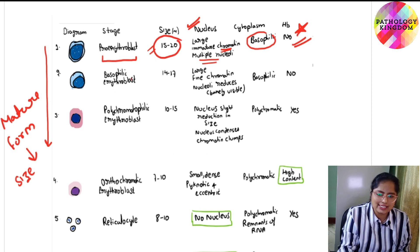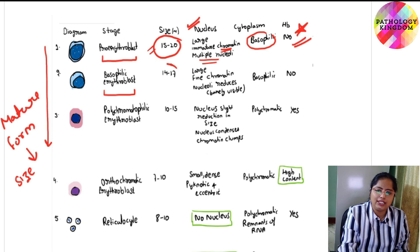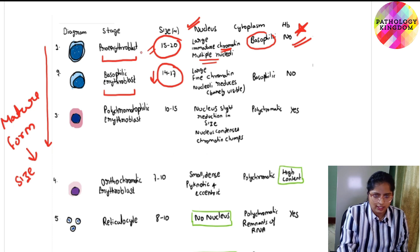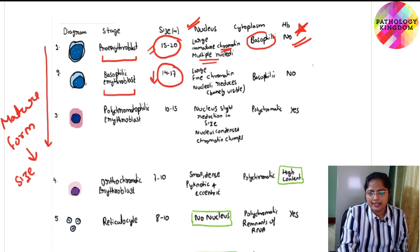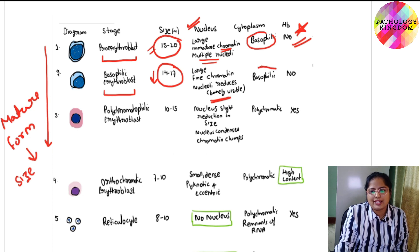The next stage is basophilic erythroblast. Basophilic means the cytoplasm is basophilic — that's why this stage is named basophilic erythroblast. The size is 14 to 17 microns, decreased compared to proerythroblast. The nucleus is large with fine chromatin. Nucleoli are fewer in number and barely visible. The cytoplasm remains basophilic and there is still no hemoglobinization.